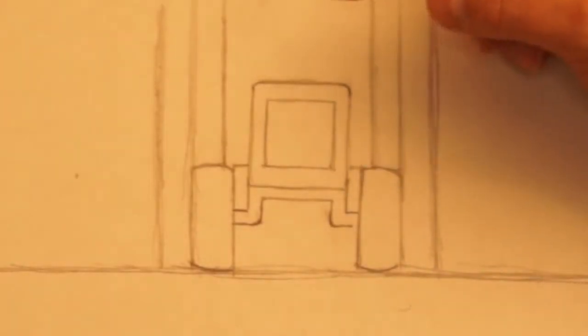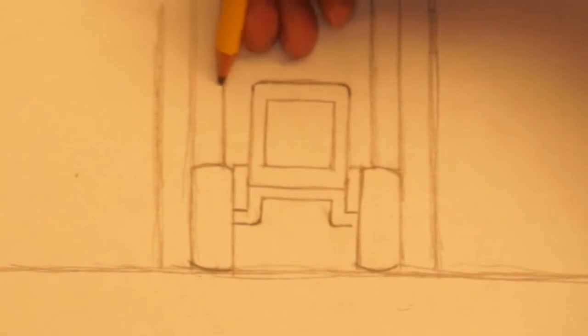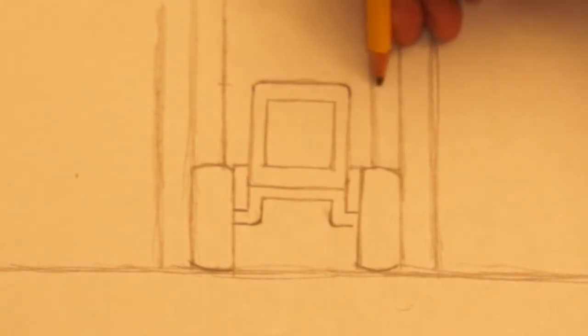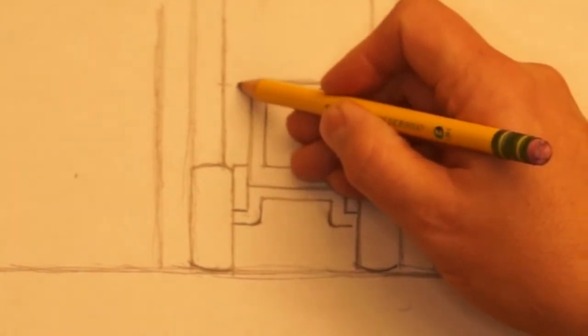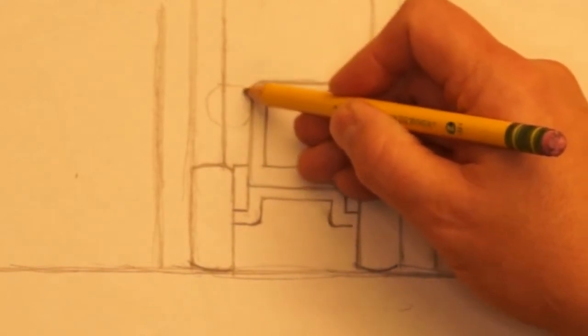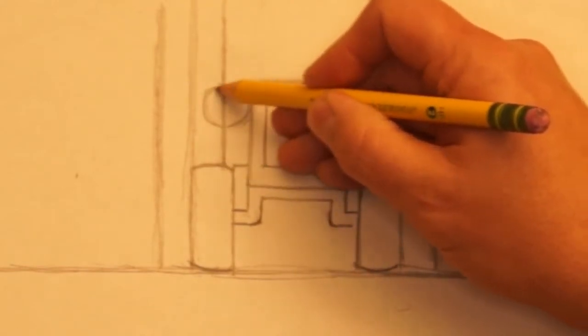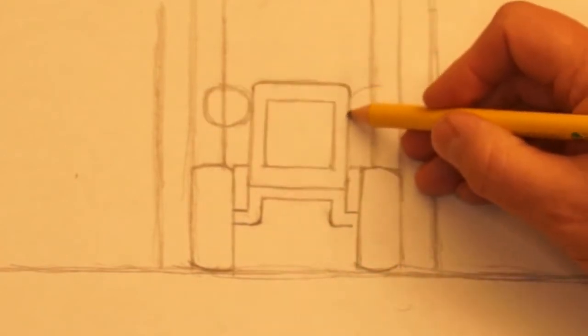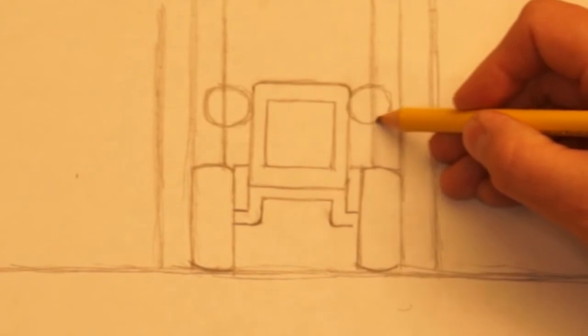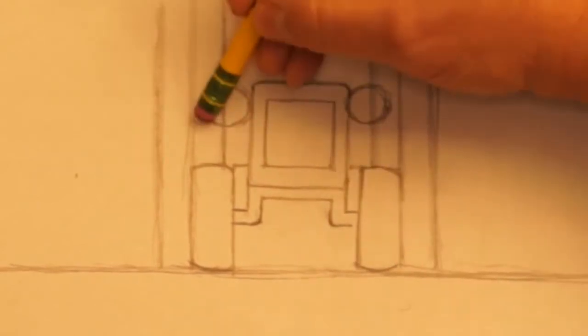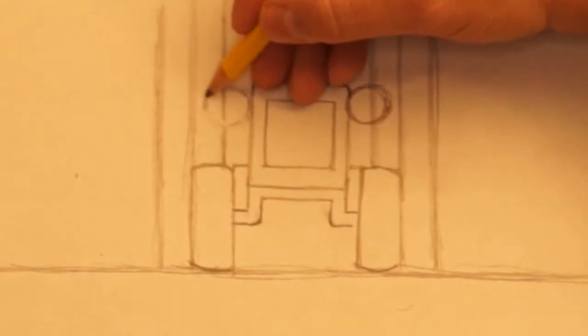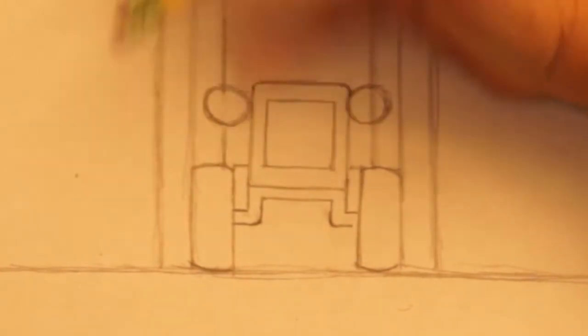Next let's make the headlights. They're going to be even with the top of the front of the tractor here and I'm going to make a circle on either side. One there and one here. I might have to make some adjustments to get them to be about the same size. I'm going to erase inside the circles.